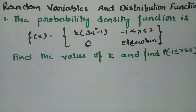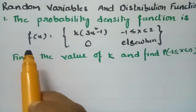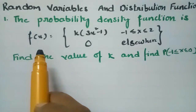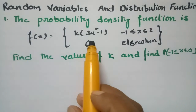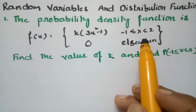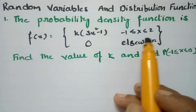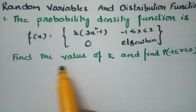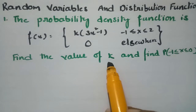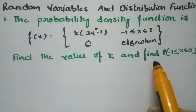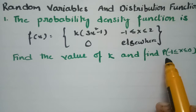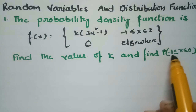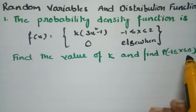Today's problem is from random variables and distribution functions. The probability density function f(x) is given as k times (3x² - 1) when x lies between -1 and 2, and 0 elsewhere. We have to find the value of k, and also find the probability when x lies between -1 and 0.